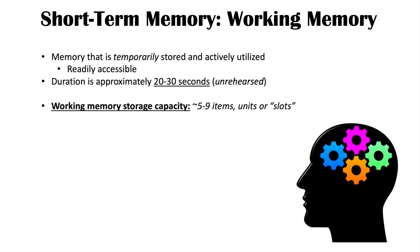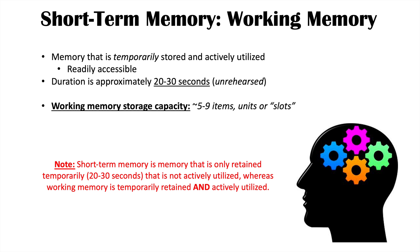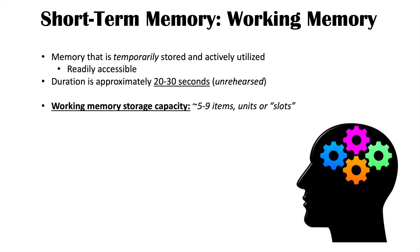Working memory storage has a particular capacity — most times it's going to be anywhere from 5 to 9 items. This is the average working memory storage capacity for an average person: 5 to 9 items, units, or slots in your memory. If you were to have a set of random digits in your mind, you can perhaps remember 5 of them or even up to 9. After that, it becomes very difficult to retain and remember correctly.